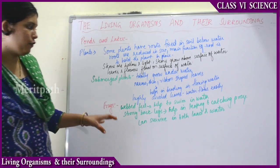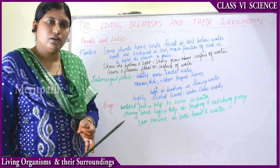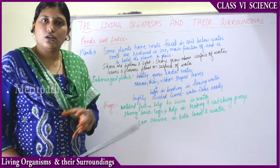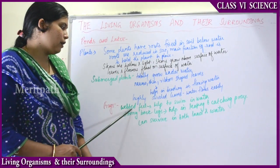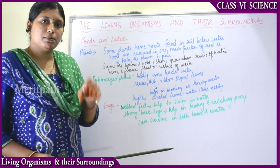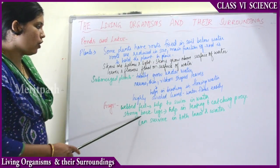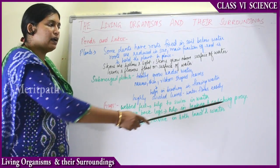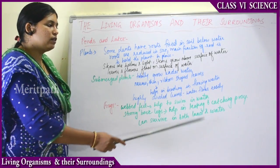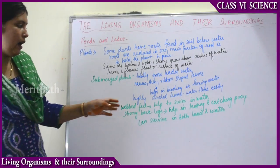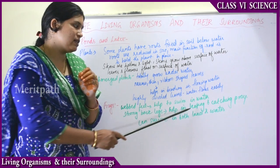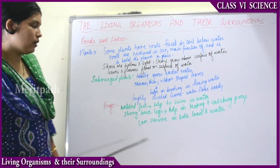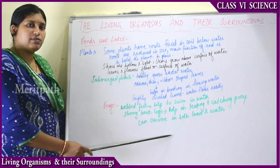Coming to animals in ponds and lakes — the frog. Frogs can live both on land and in water. When in the water, they breathe through gills; when on land, they breathe through lungs. Frogs also have webbed feet — spider-shaped feet — that help them swim in water. Their strong back legs help in leaping and catching prey. Frogs usually eat small insects. These are the adaptations of frogs, which live in both land and water.